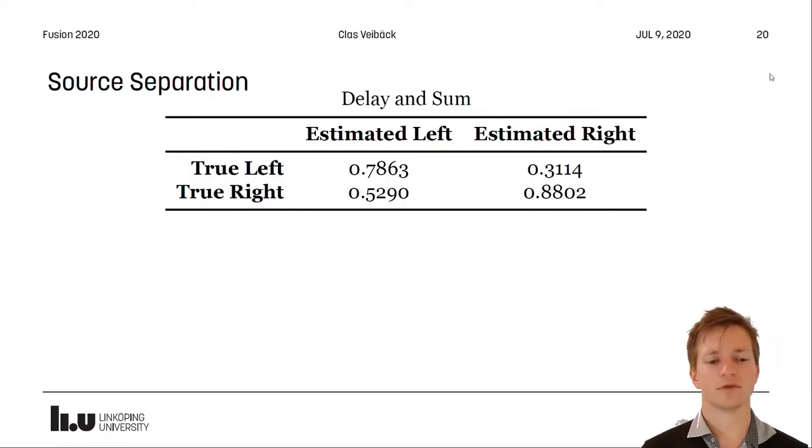We also looked at sound source separation. So in this case we had a simulated environment. We recorded a left and right channel and we tried to estimate them without including the other. And as we can see, we have quite a decent correlation between the estimated and the true channels, but we also have a lot of crosstalk between the left and right channels.